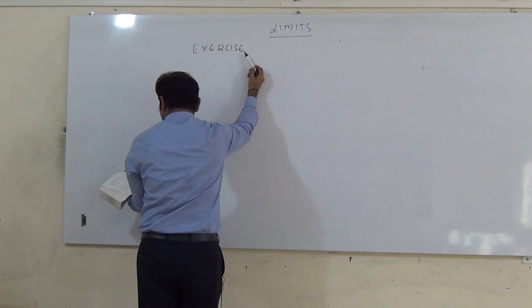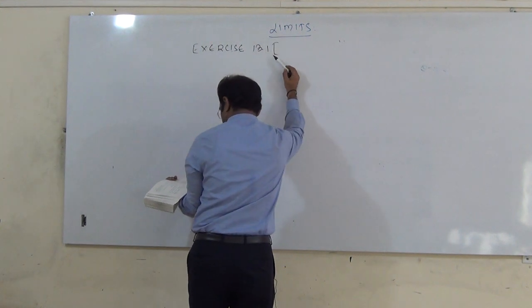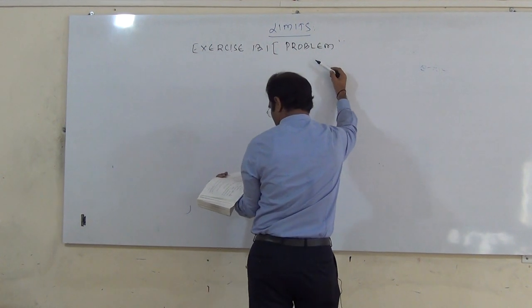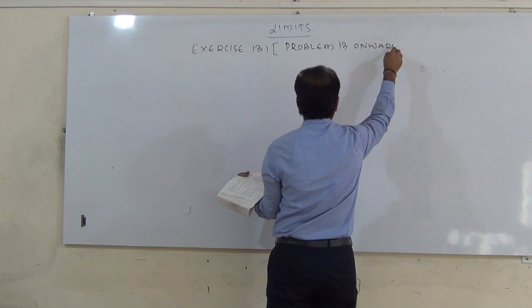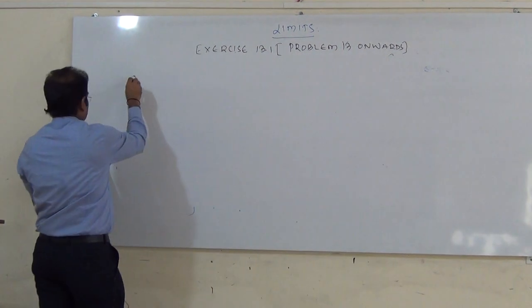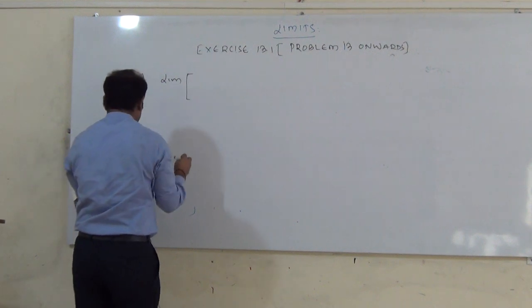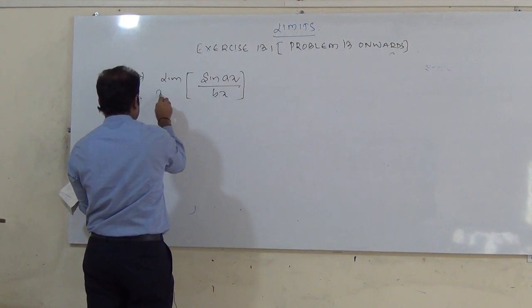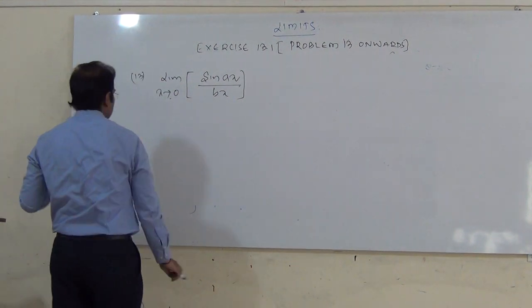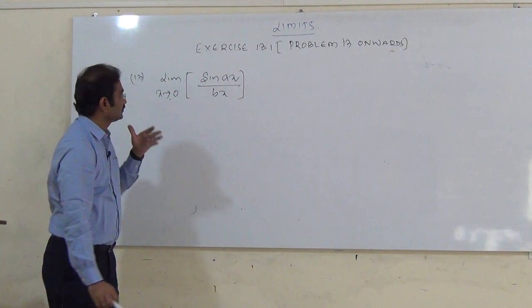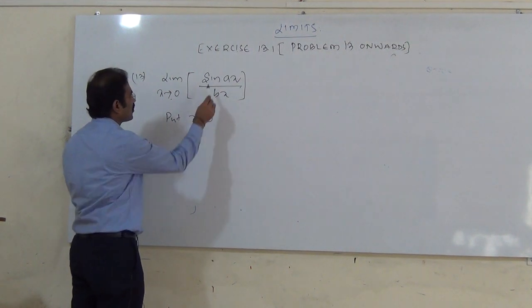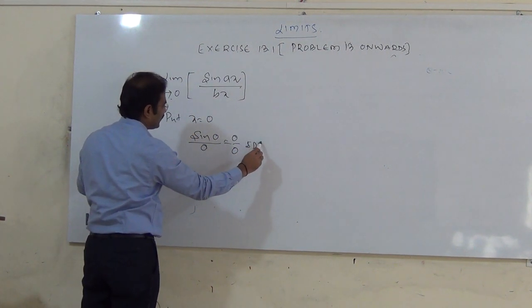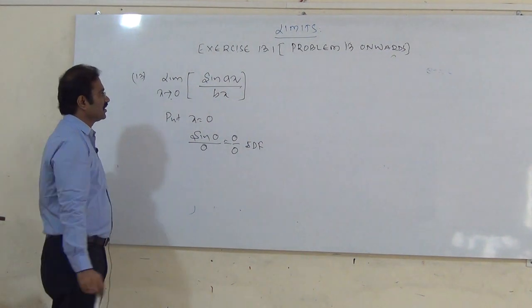Exercise 13.1, problem number 13 onwards. The 13th question: limit of sin(Ax) / (Bx) as x tends to 0. Observe carefully — you should have the form sin θ / θ. If we put x = 0, we get sin(0) / (B·0) = 0/0, which is indeterminate form (IDF). This is not the answer.